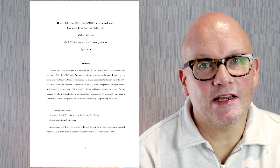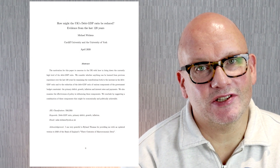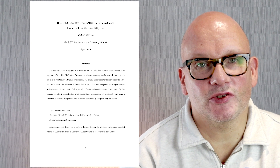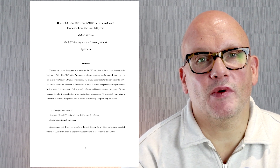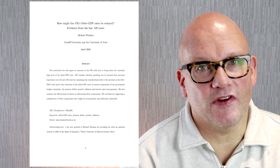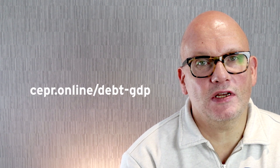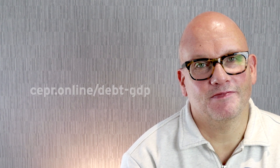I think so — we could be talking about this again. Thank you very much. Mike's paper is called 'How Might the United Kingdom's Debt-GDP Ratio Be Reduced? Evidence from the Last 120 Years.' It's going to be published in Economic Affairs in June, and there's an earlier version available as DP 17172 at CPR. Well, that's all for now. We'll see you soon.